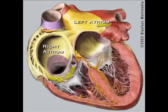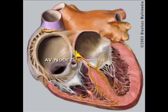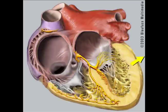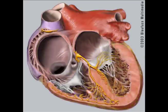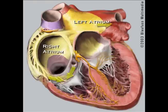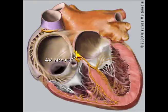The gold flowing through the heart represents the electricity of the heart. The electricity starts at the sinus node, seen here, and then progresses through the atrium.